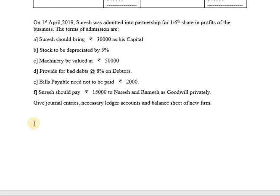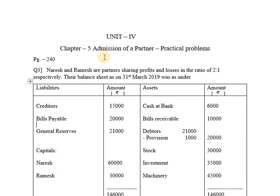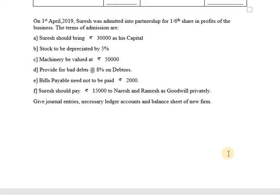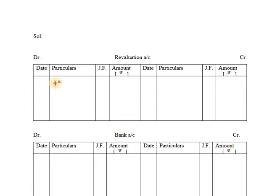The first adjustment: Suresh brings 30,000 as capital — this will be recorded in the cash account. For assets and liabilities adjustments: Stock to be depreciated by 5%. The value of stock is 30,000. 10% of 30,000 is 3,000, but we have to provide depreciation at 5%, so it will be 1,500. Decrease in value of an asset is recorded on the debit side. So 30,000 into 5 divided by 100 gives 1,500.